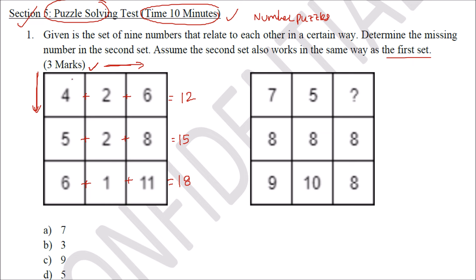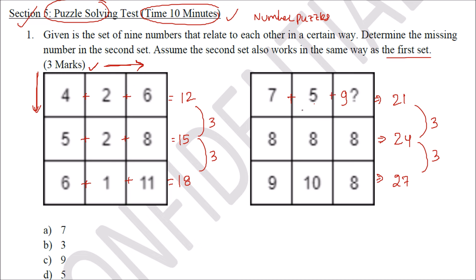There might be different logic — in some cases they will be multiplying. As you solve more questions you will become familiar with the patterns. The row sums are 12, 15, and 18 — a difference of 3 each time. The same pattern must apply to the second set: 8 plus 8 is 16, 16 plus 8 is 24; 9 plus 10 is 19, 19 plus 8 is 27. So the missing row must sum to 21: 7 plus 5 plus 9 equals 21. The answer is option C.